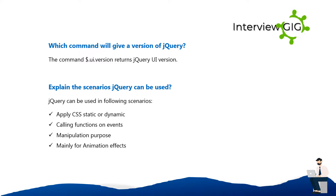Which command will give the version of jQuery? The command $.ui.version returns the jQuery UI version.